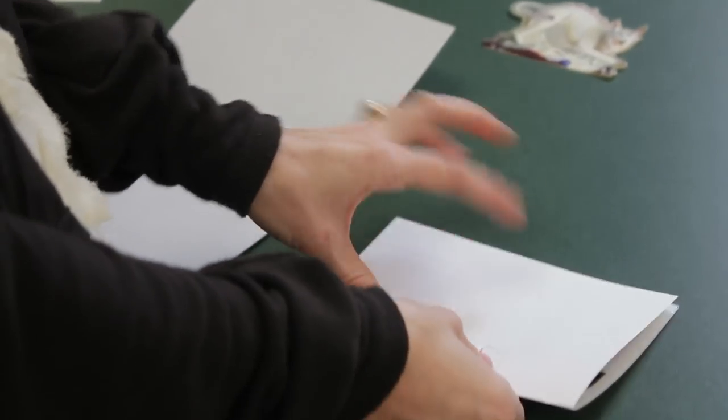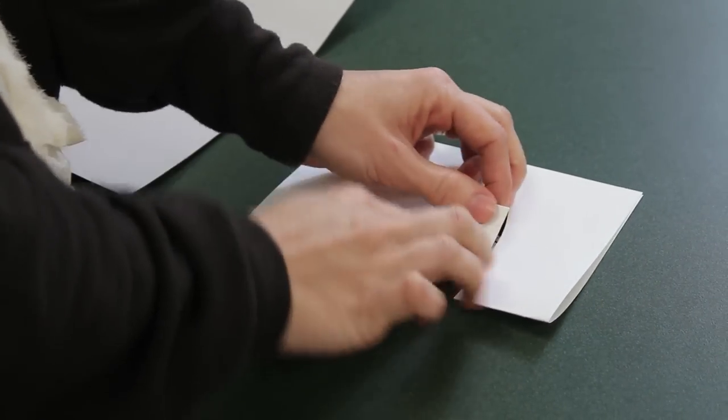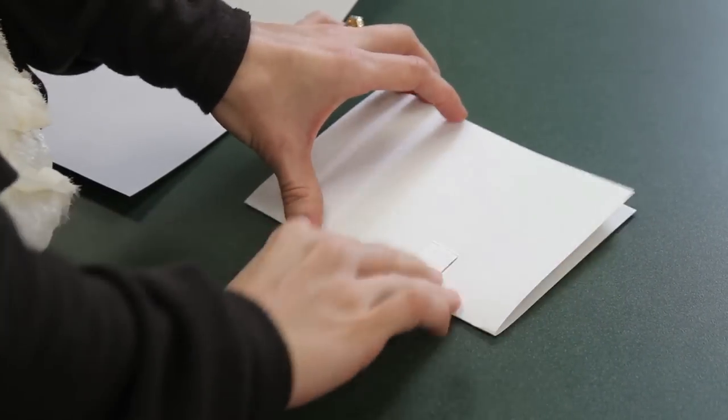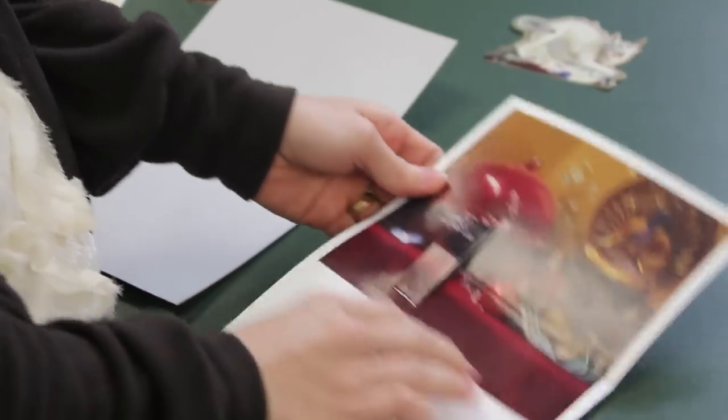Then, fold the card in half and cut two slits that are parallel and of equal length into the folded card. This will create your pop-up. You can crease it over now and poke it through the card. As you can see, you now have your pop-up.